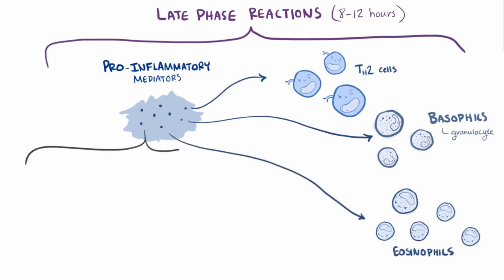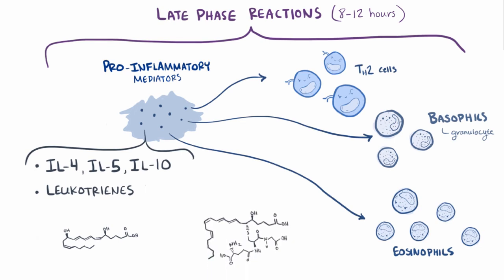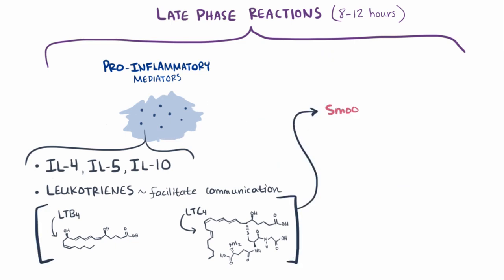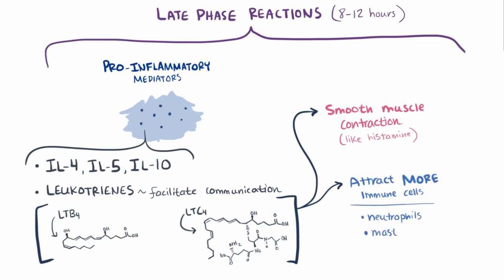These include some of those same interleukins again, interleukin 4, interleukin 5, and interleukin 10, but also leukotrienes, which are smaller molecules made out of fatty acids and facilitate communication between a local group of cells. Two leukotrienes in particular, LTB4 and LTC4, can not only cause smooth muscle contraction and damage to the epithelium, like histamine, but they can attract immune cells like neutrophils, mast cells, and eosinophils, to their location even after the allergen is long gone.